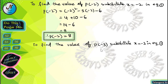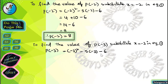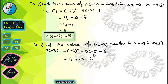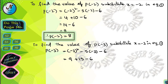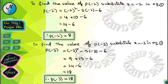To find the value of p(-3), substitute x is equal to minus 3 in equation 1. After substituting, we get p(-3) is equal to minus 3 whole square minus 5 into minus 3 minus 6. After simplification, minus 3 whole square is plus 9, minus 5 into minus 3 is plus 15, and minus 6 remains. We get 9 plus 15 minus 6, which gives 24 minus 6 equals 18. Therefore, p(-3) is equal to 18.